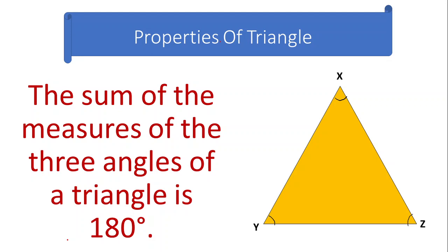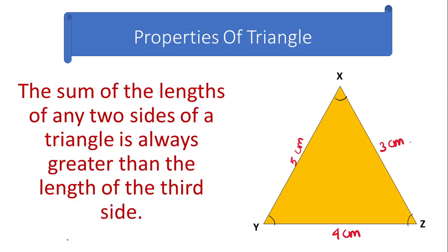After seeing the classification based on sides and types of angles, let's see what is meant by the properties of a triangle. The first property of the triangle is that the sum of the measures of the three angles is 180 degrees. If you add all the angles of a triangle — x, y, and z — their addition should come to exactly 180 degrees. It should not be more than nor less than 180 degrees.